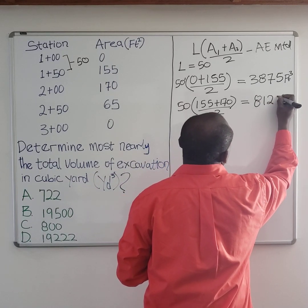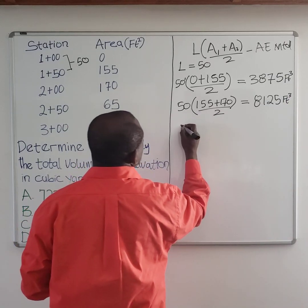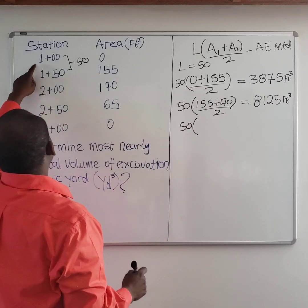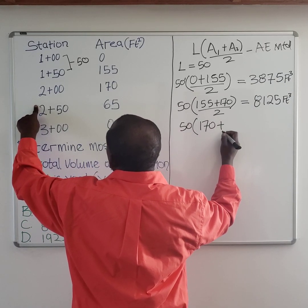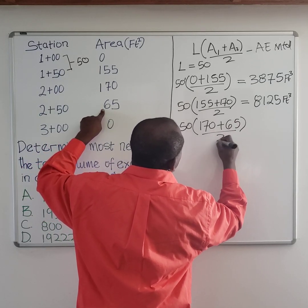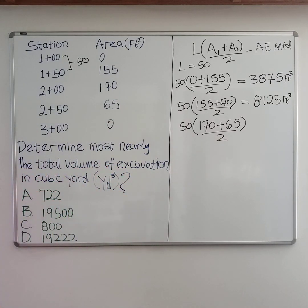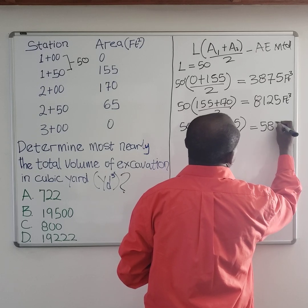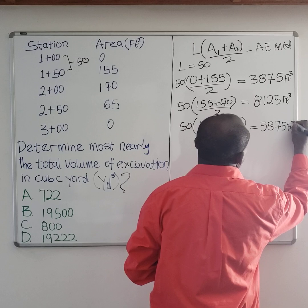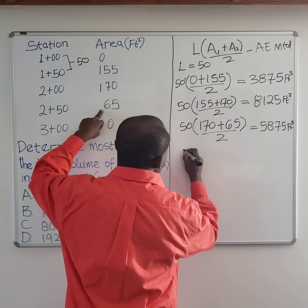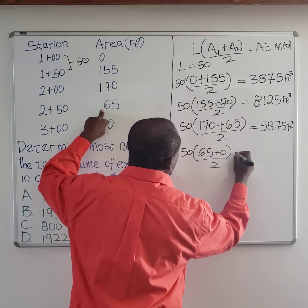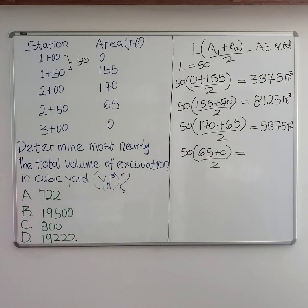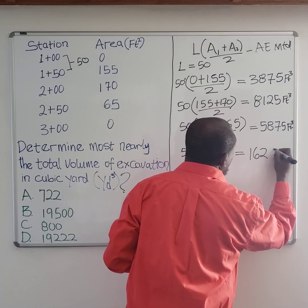You continue like that from one station to the next. From the third to fourth station: (173 plus 65) divided by 2, multiplied by 50, will give you 5,875 feet cubed. Then the last one: (65 plus 0) divided by 2, multiplied by 50, gives you 1,625 feet cubed.